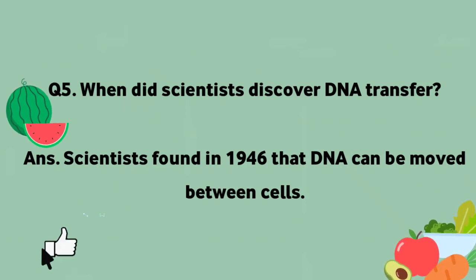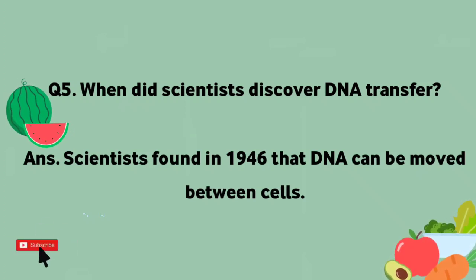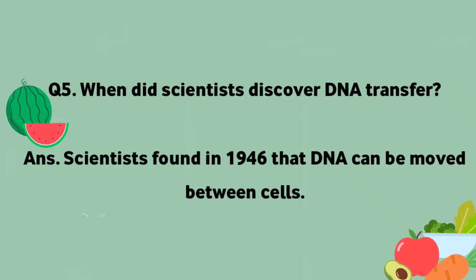When did scientists discover DNA transfer? Scientists found in 1946 that DNA can be moved between cells. Sainzidanon ne 1946 mein dheryafd kiya ki DNA ko khaliat ke dhermiyan muntaql kiya jasakta hai.